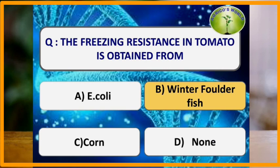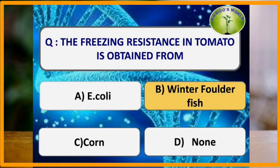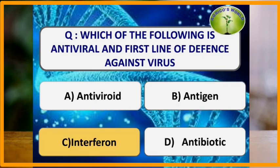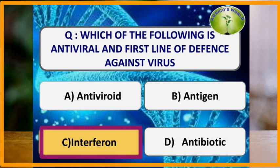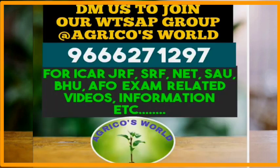Freezing resistance in tomato is obtained from winter flounder fish. Interferons are antiviral and act as a first line of defense against viruses.